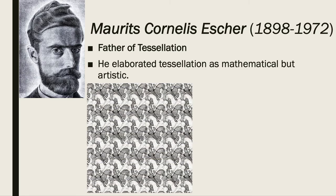This is also one of his works featuring horses — the black ones are going this way, and the white ones are going the other way. The clear thing is that there are no gaps and no overlapping. You can see that it really fits on the edges of the images, and the other image fits in perfectly.